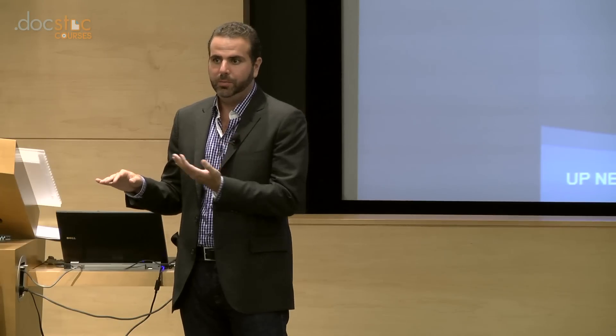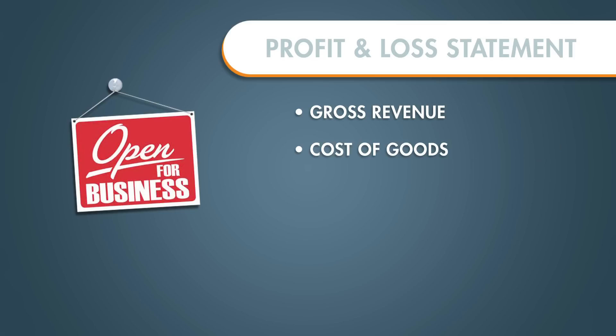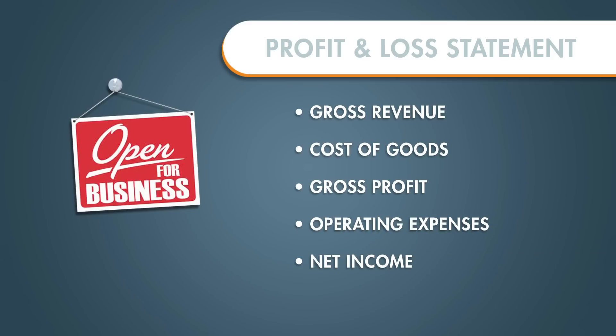As part of your operating expenses, you may be paying yourself a salary or giving yourself a draw — but let's say you're not. That $50,000 is the money you get to keep to live off of and to reinvest in your business. So again, the five key components are: gross revenue, cost of goods, gross profit, operating expenses, and net income.